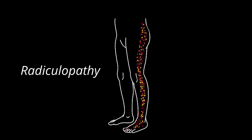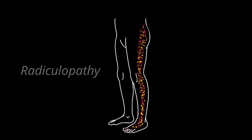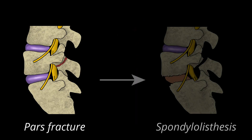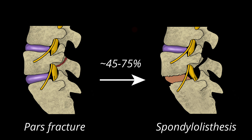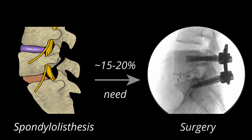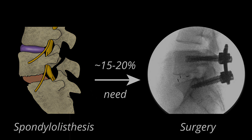I have a video about radiculopathy and sciatica — I'll put the link in the description below if you'd like to check it out. Studies have shown that approximately 45 to 75 percent of patients with a pars fracture will develop spondylolisthesis over their lifetime, but it is important to remember that not all patients with spondylolisthesis will need surgery. In fact, only a small percentage of patients will.